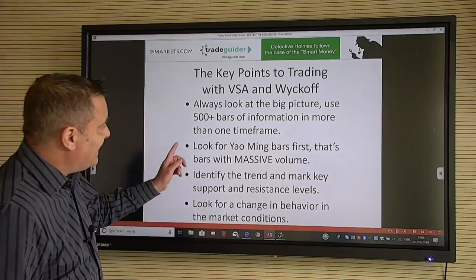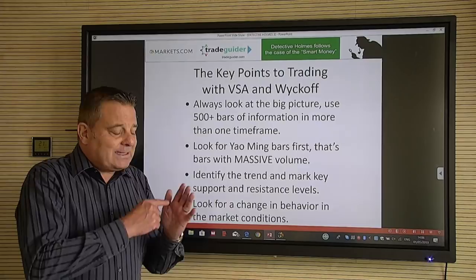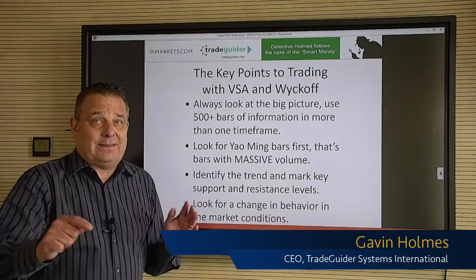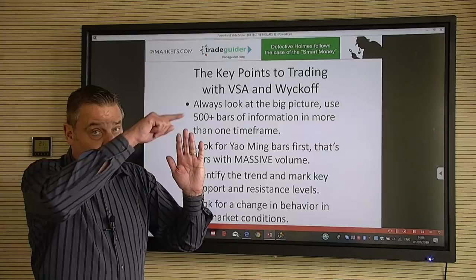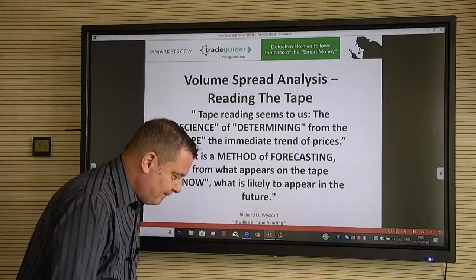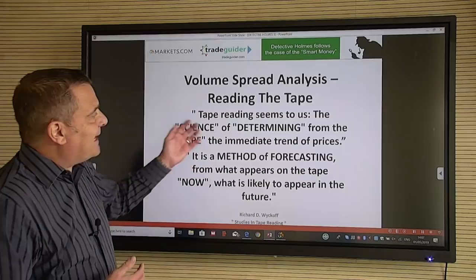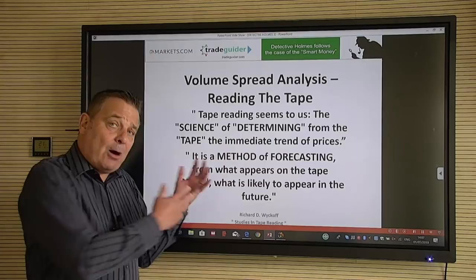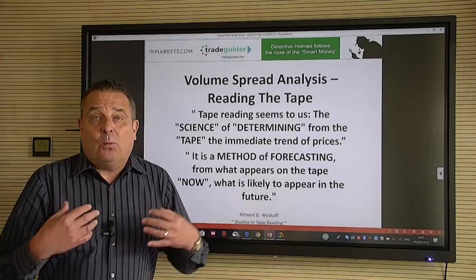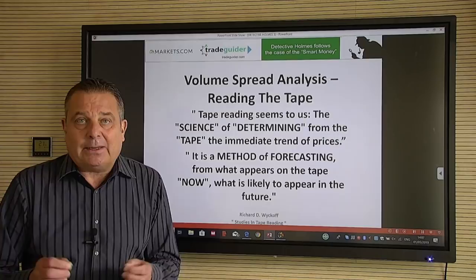The trend is your friend, but if you see a big volume spike in an uptrend and you buy, that is not your friend — you're likely buying the top. However, if you see the volume spike as we did in the NZD/USD and the market moves down below that bar — what I call the trigger number — then the trend becomes your friend because it's changed behavior. Volume Spread Analysis, or tape reading, is the science of determining from the tape the immediate trend of prices and forecasting from what appears on the tape what's likely to appear in the future.